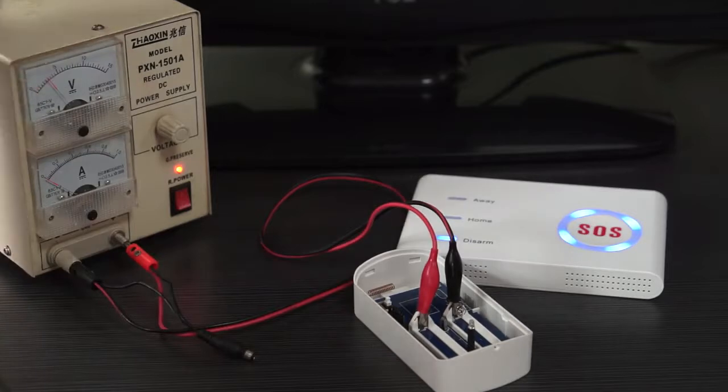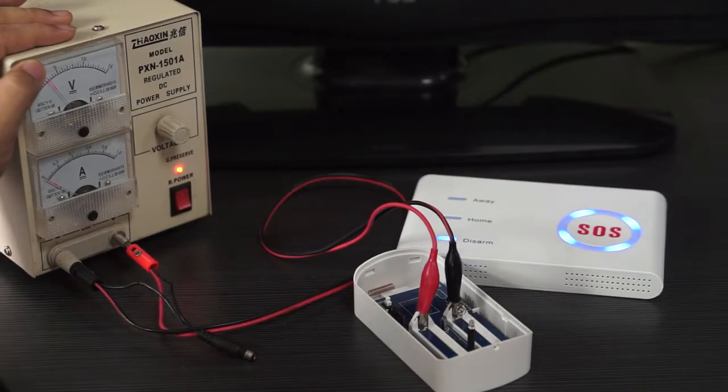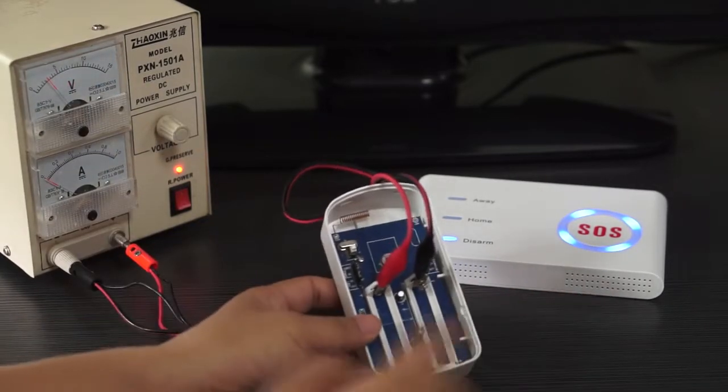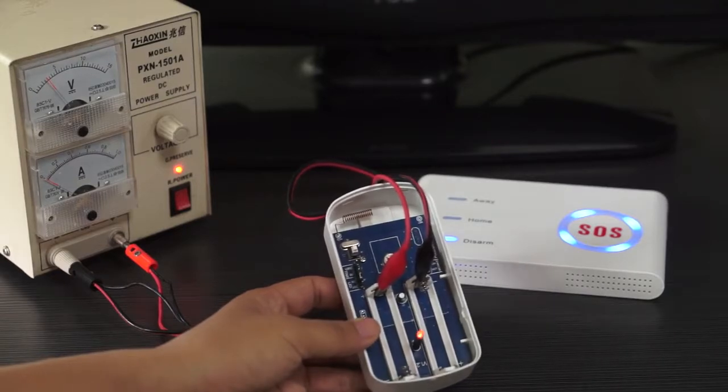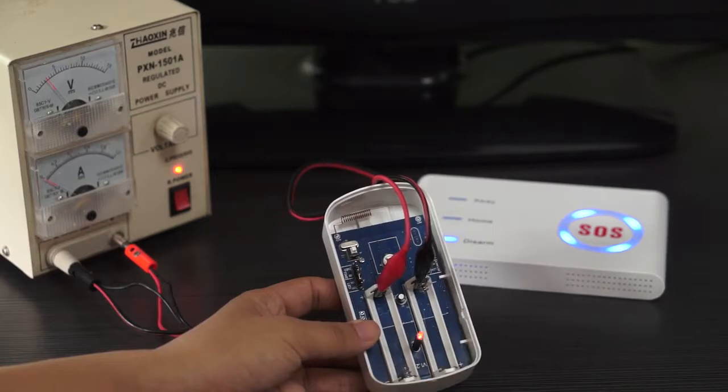Now on the table, we have the regulated DC power supply, which allows me to adjust the voltage. And the power supply is connected to the wireless passive infrared motion sensor.